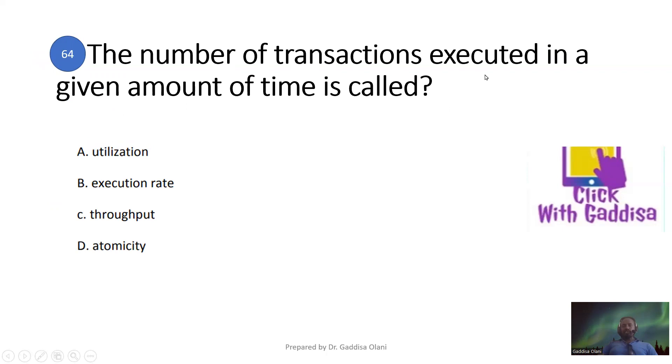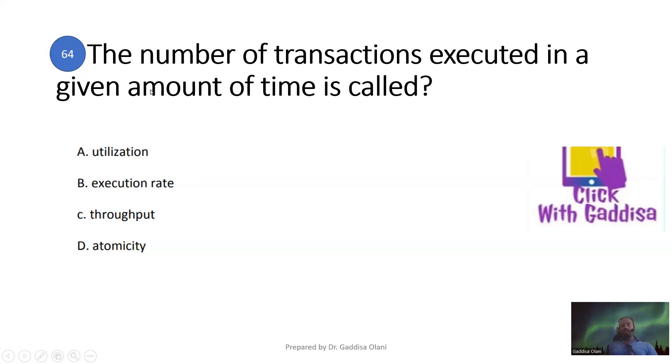The simplest approach to introducing redundancy is to duplicate every disk — this is called mirroring. If a transaction is rolled back, all database changes made inside the transaction are undone. The transaction that completes execution successfully is said to be committed. Atomicity means a transaction must execute exactly once — completely or not at all.